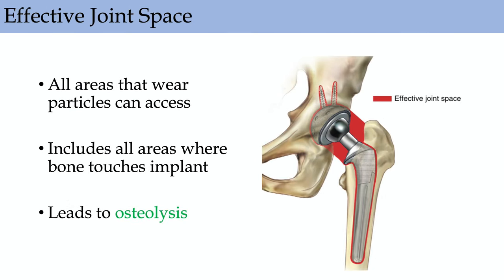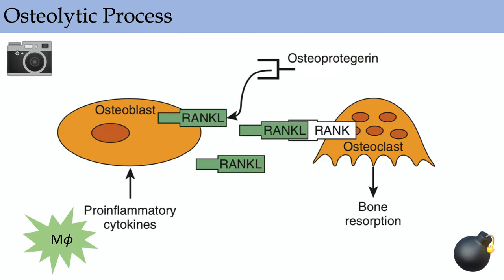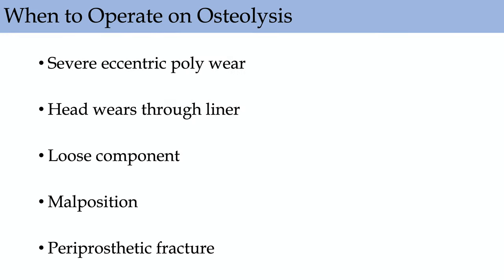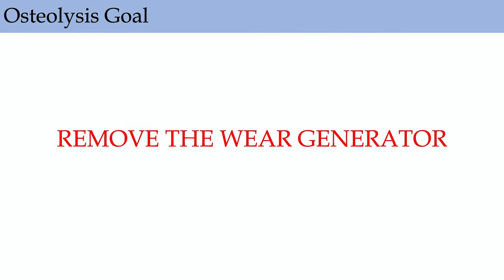This will almost certainly be tested in relation to osteolysis. Polyethylene particles are the wear generators. RANK ligand is produced by osteoblasts; RANK ligand binds to RANK on osteoclasts, leading to bone resorption. Osteolysis is mediated by osteoclast activation via osteoblasts. Osteoprotegerin protects against osteolysis by binding RANK-L so it cannot bind to RANK. You can see endosteal scalloping on x-ray as a sign of osteolysis. Operate for severe eccentric poly wear, head wear-through of the liner, loose or malpositioned components, or periprosthetic fracture. The goal is to remove the wear generator — the liner — though with highly cross-linked poly, osteolysis is rarely seen anymore.